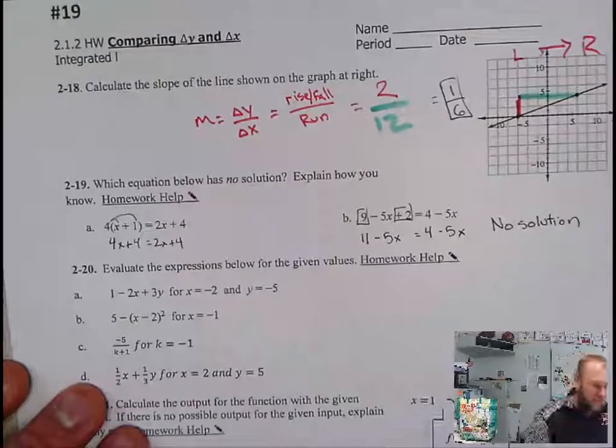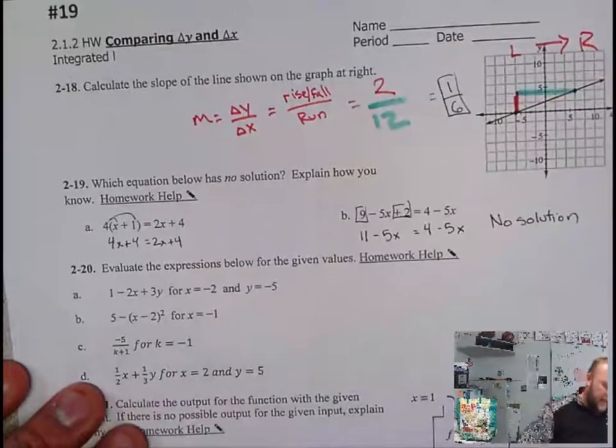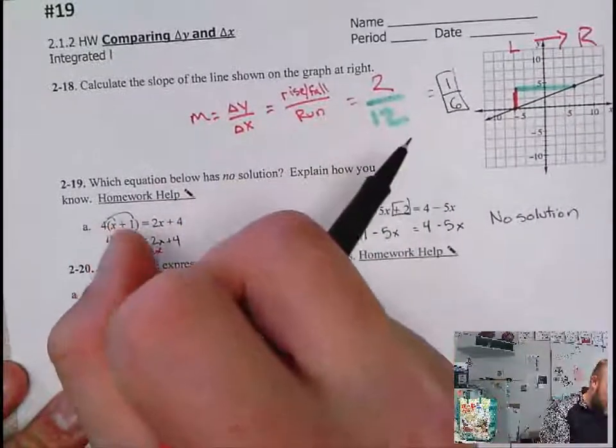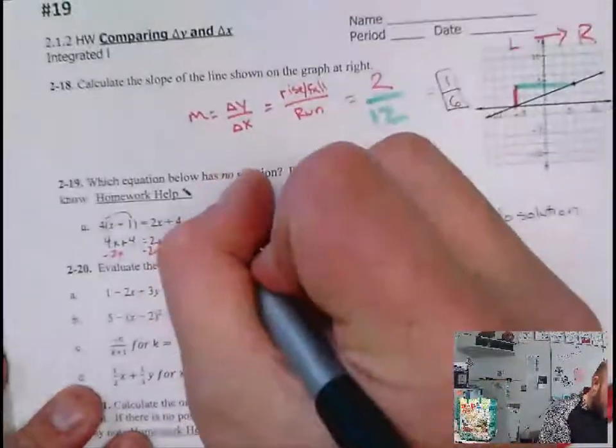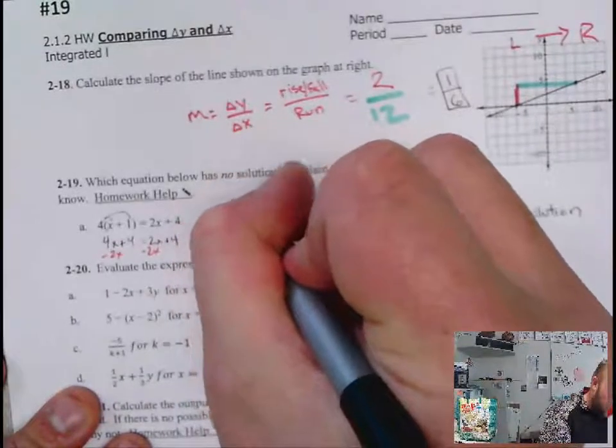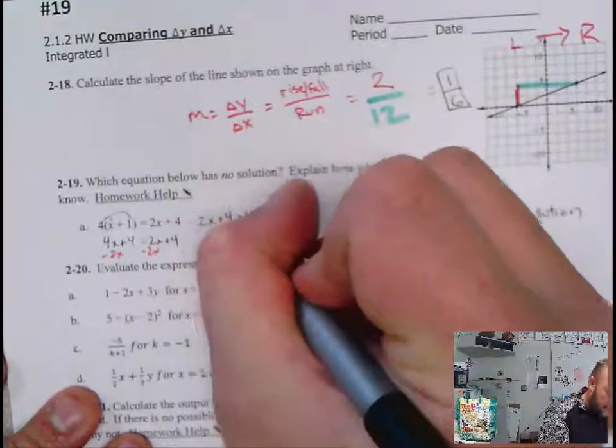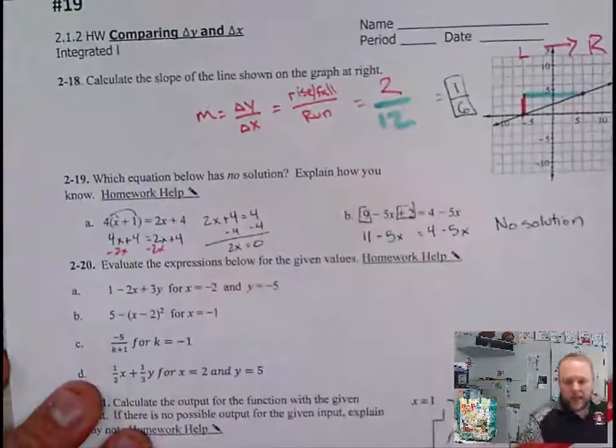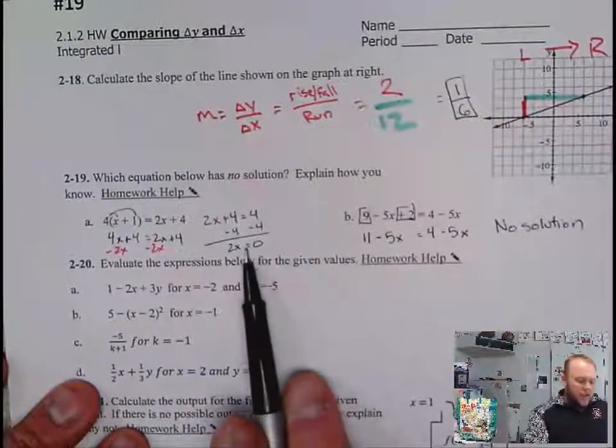But we could solve them both out. Let's do that. So over here, subtract 2x, subtract 2x. I get 2x + 4 = 4. Subtract four, subtract four. 2x = 0. Now, a lot of times students say, oh, this is no solution.